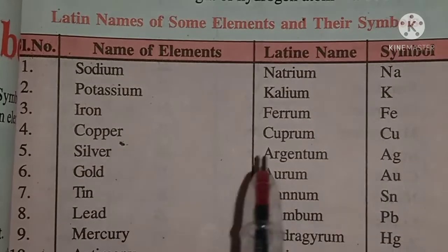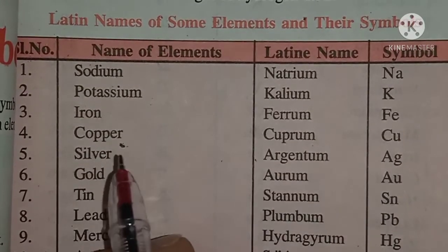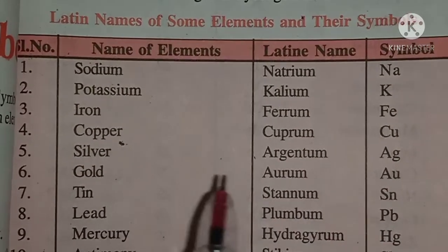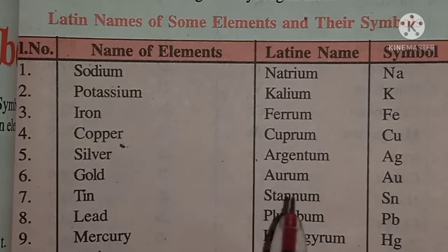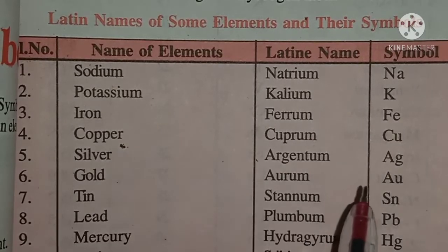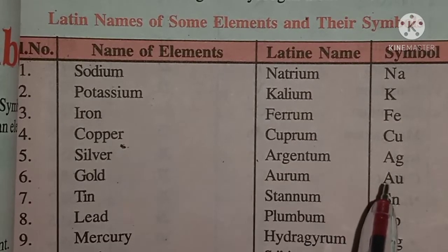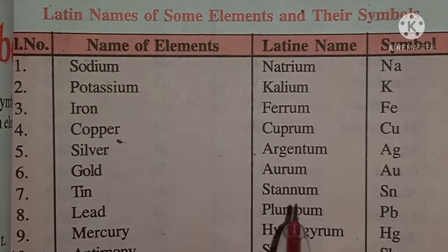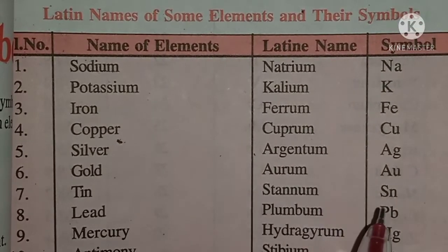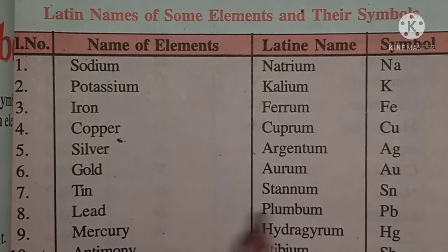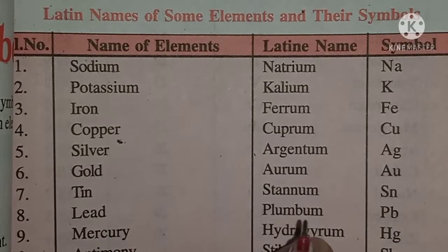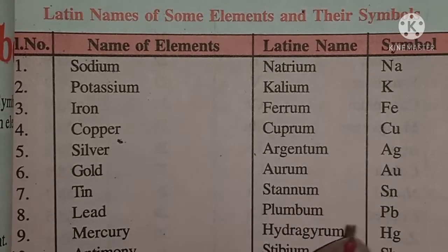Silver: Latin name Argentinium, symbol Ag. Gold: Latin name Aurum, symbol Au. Tin: Latin name Stannum, symbol Sn. Lead: Latin name Plumbum, symbol Pb.